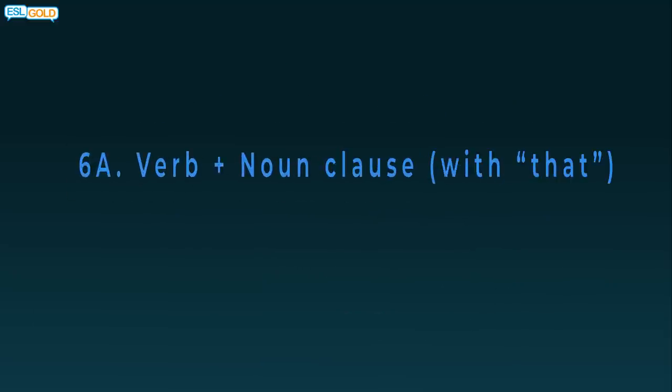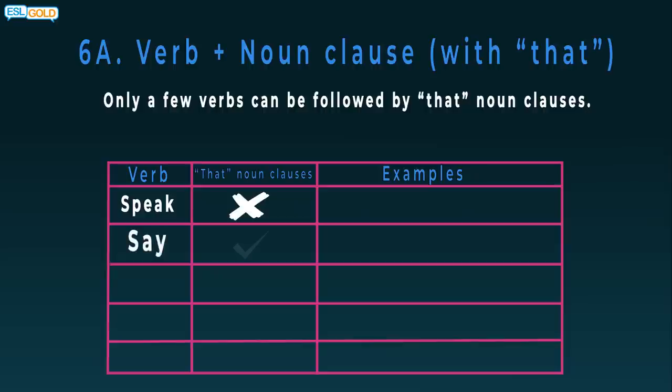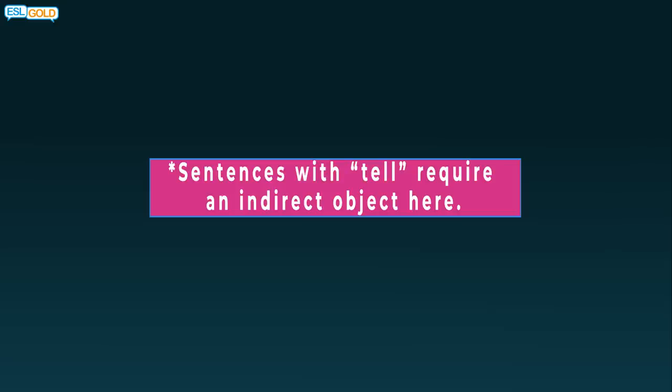6a. Verb plus noun clause with that. Only a few verbs can be followed by that noun clauses. Speak: no. Say: yes. He said that he was going home. Tell: yes. She told him that she was staying. Discuss: no. Talk: no. Sentences with tell require an indirect object here.